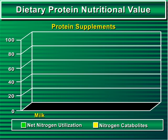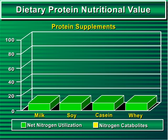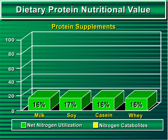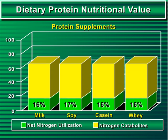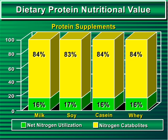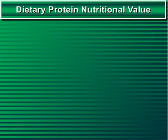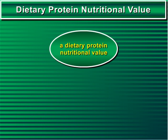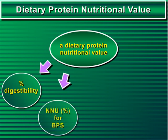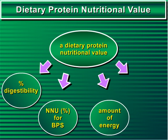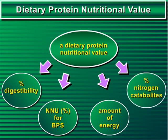On the other hand, milk, soy, casein, or whey — the main proteins found in most protein supplements — only provide an average of 16% NNU. This means that only 16% of their constituent amino acids act as precursors of body protein synthesis, while the remaining 84% are catabolized, thus releasing nitrogen catabolites and energy. To conclude, a dietary protein's nutritional value can be evaluated by four parameters: the percentage of its digestibility, the percentage of its NNU for body protein synthesis, the amount of its released energy, and the percentage of its released nitrogen catabolites.